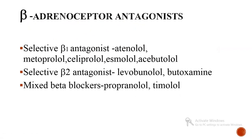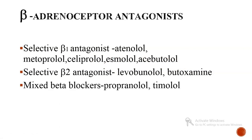Now let us study the second category — beta adrenoceptor antagonists. These are drugs that inhibit the action of sympathetic stimulation only at the beta receptor in our body. They are further classified into three types: selective beta-1 antagonists (examples: atenolol, metoprolol, celiprolol, esmolol, acebutolol); selective beta-2 antagonists (examples: levobunolol, butoxamine); and mixed beta blockers (examples: propranolol and timolol).